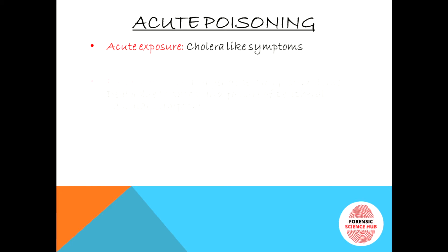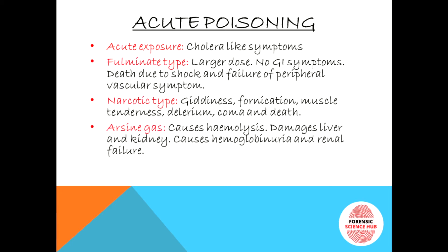In acute poisoning there are two sub-types. The first is the acute exposure type, where cholera-like symptoms can be seen. There is throat constriction, intense thirst, difficulty in swallowing, and involuntary frequent stools — first dark and bloody, then becoming colorless, odorless, and rice-water-like. These symptoms indicate an acute arsenic exposure case.